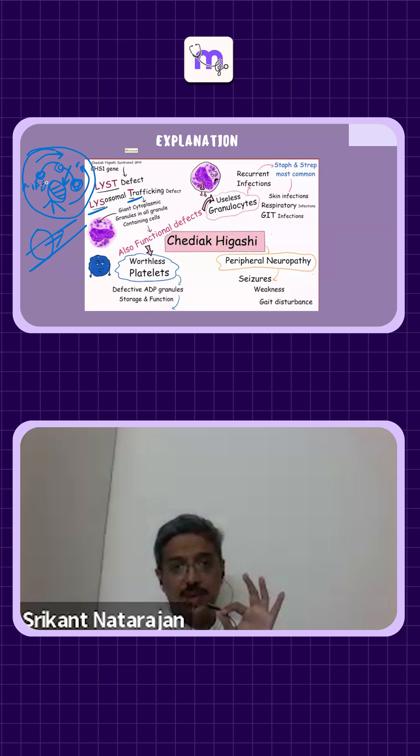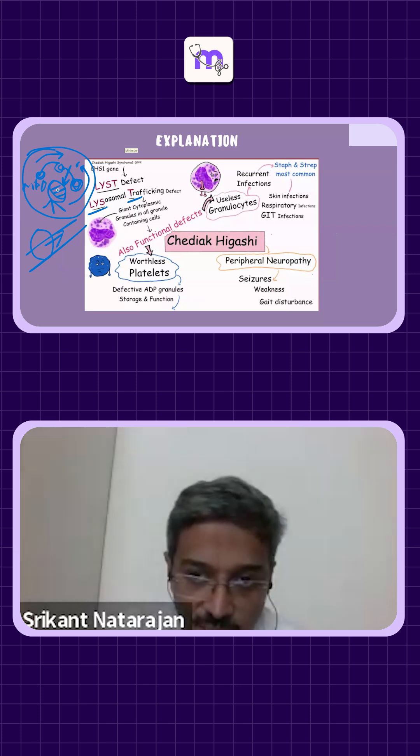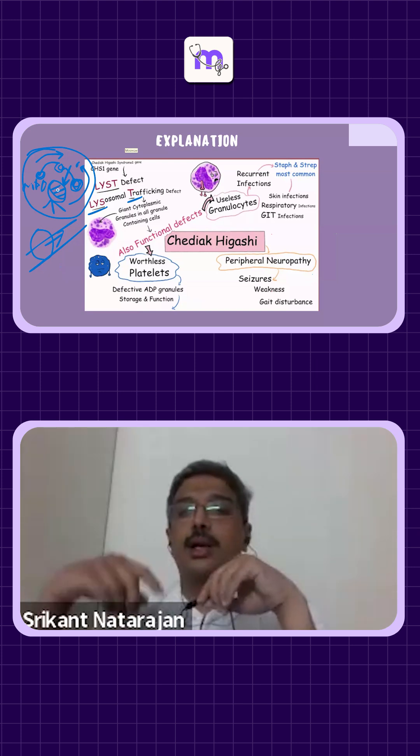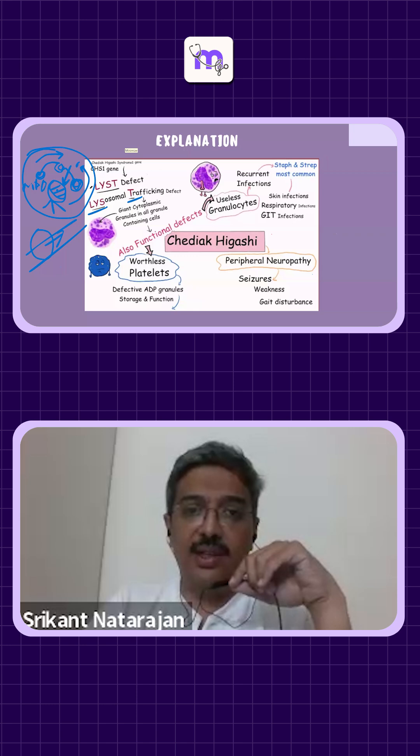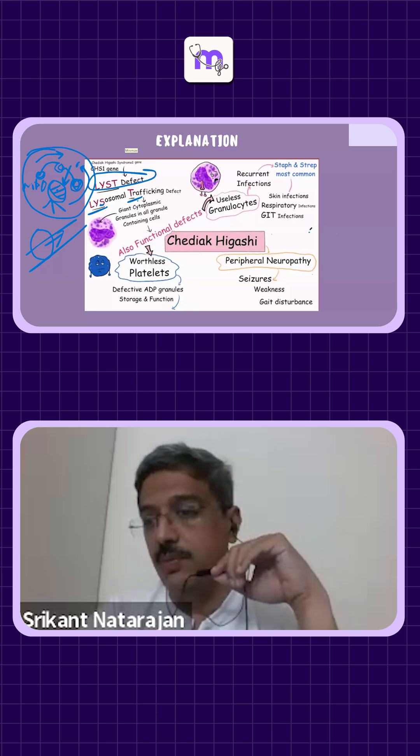That grill is nothing but myeloperoxidase. MPO stands for myeloperoxidase, which is sitting here and literally bleaching out the organism by producing HOCL. And that movement, lysosomal trafficking, is called the LIST defect - lysosomal trafficking defect. It's just an acronym to remember.